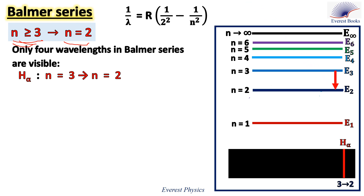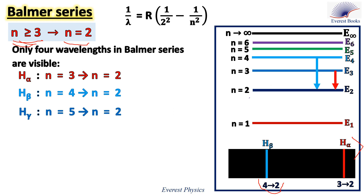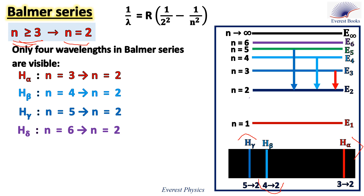This is line alpha in the emission spectrum of the hydrogen atom. Line beta corresponds to the downward transition from the N = 4 energy level to the N = 2 energy level. This is line beta. Line gamma corresponds to the downward transition from the N = 5 energy level to the N = 2 energy level. This is line gamma. Finally, line delta corresponds to the downward transition from the N = 6 energy level to the N = 2 energy level. So these are the four spectral lines in the emission spectrum of the hydrogen atom.